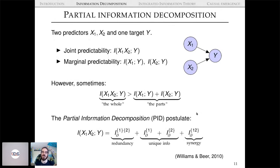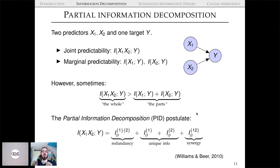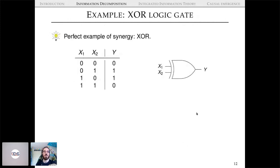They ended up with PID, which splits the joint mutual information into one redundancy, two unique informations, and one synergy. Throughout, the two indices in curly brackets below refer to the sources, and there's always only one single target.